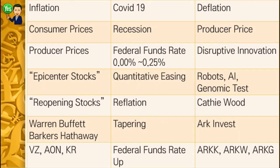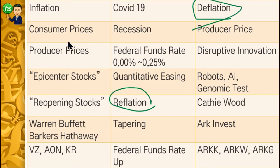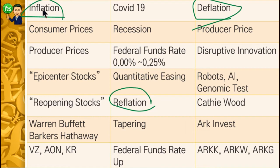Hi, this is Will. Today we talk about the market condition depending on three terms: deflation, reflation, and inflation. We start from the definition of the words. Deflation means in the market we have less money — less cash. Reflation is when less cash comes back to the market. Inflation is too much cash in the market. That's the three terms for today.